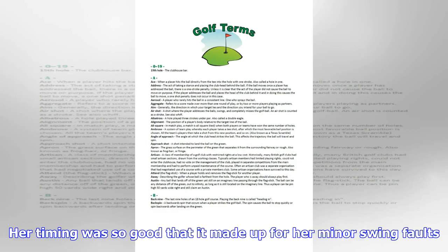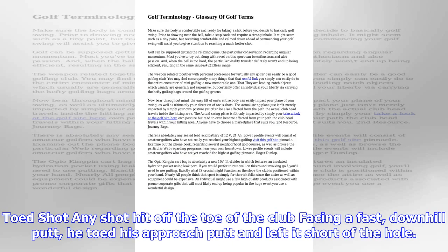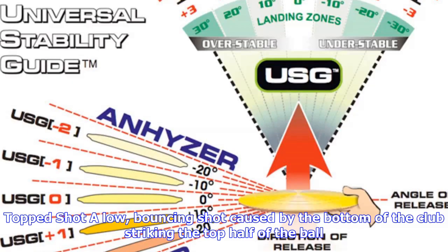Separation: when any of the various body parts and/or the club move either faster or slower than the other elements of the swing. He worked very hard to prevent his arms from separating on the downswing.